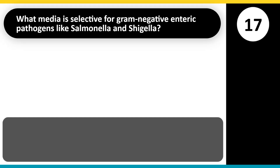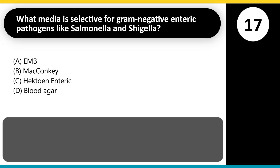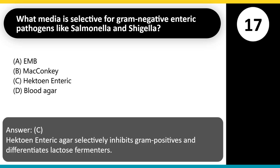What media is selective for gram-negative enteric pathogens like Salmonella and Shigella? A. EMB. B. MacConkey. C. Hektoen enteric. D. Blood agar. Answer: C. Hektoen enteric agar selectively inhibits gram-positives and differentiates lactose fermenters.